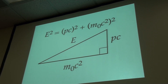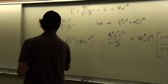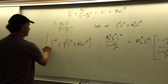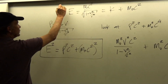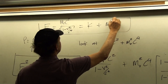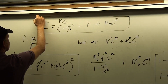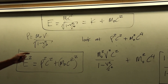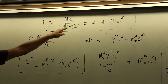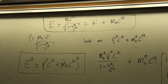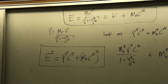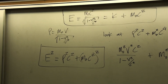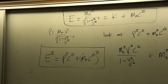This just happens to be a convenient way of expressing the total energy, but we should remember that total energy is a scalar. So we have our choice of two different ways to express the total energy: we can either express it in terms of the relativistic kinetic energy, or in terms of the relativistic momentum.